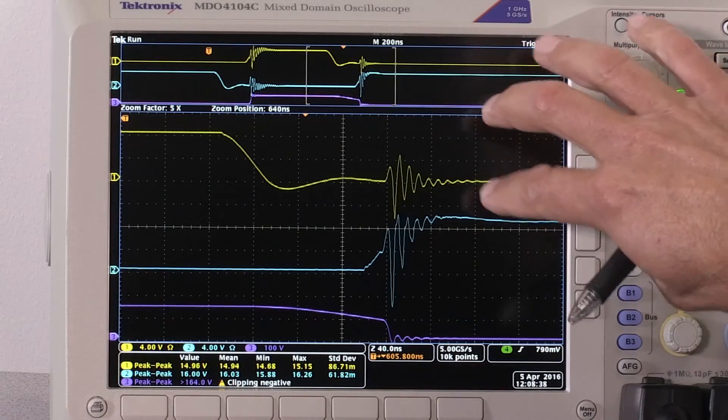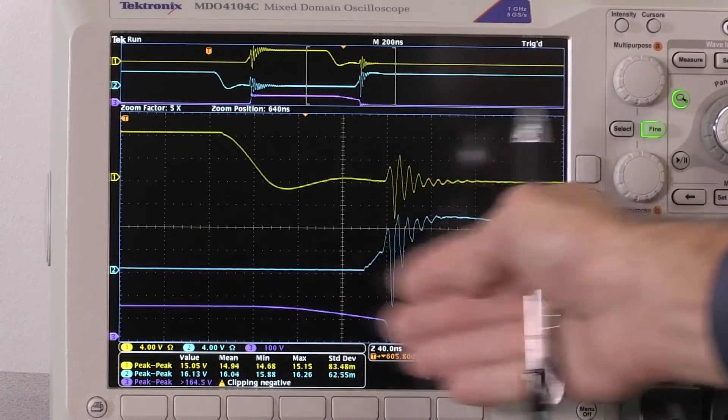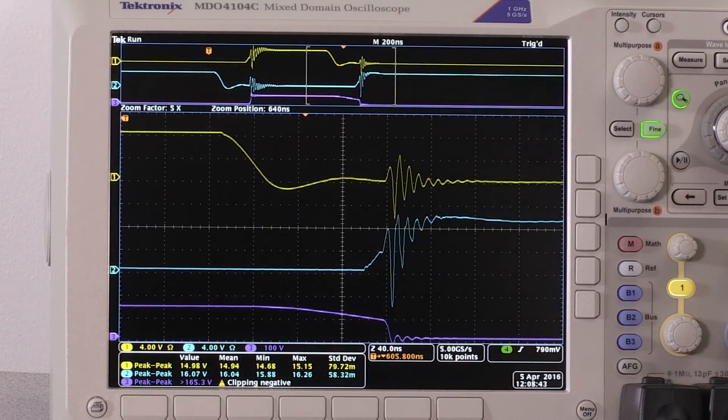This is the true differential high-side gate source voltage that's riding on top of this 150-volt switch node.